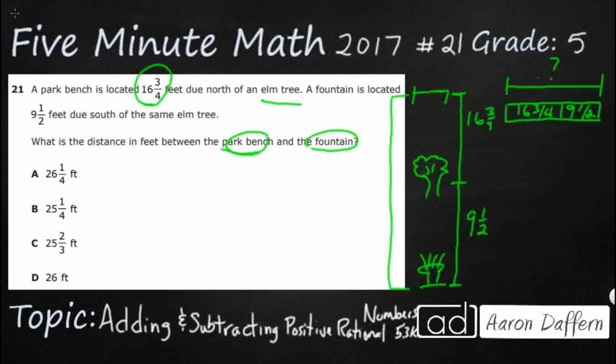So, how do we add mixed numbers? That's kind of a tricky one. Well, there's going to be two steps to it. First, let's just line it up like this. We can at least take care of our whole numbers. So, 16 and 9. That's 25.